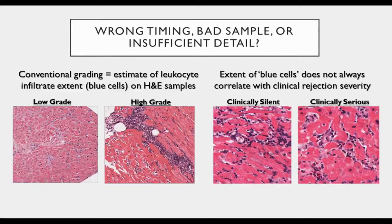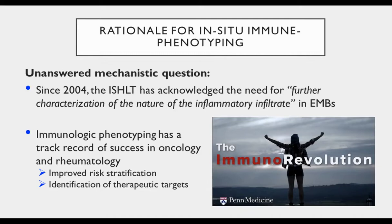The rationale for this work was pretty obvious. Since 2004, the International Society of Heart and Lung Transplantation has recognized the problem with little blue cell counting and has advocated for further characterization of the nature of the inflammatory infiltrates on biopsies. Yet in the intervening 15 years, there's been very limited application of tissue-level immune phenotyping in heart transplant tissues. This stands in contrast to other fields where remarkable progress has been made based on immunologic phenotype, improving risk stratification, identification of therapeutic targets, and so on. Transplant was being left in the dust a little bit here.